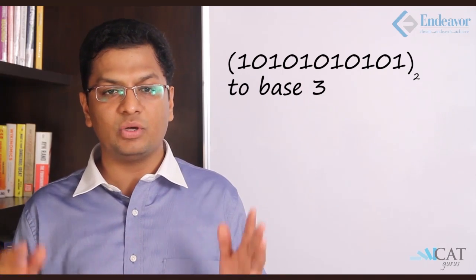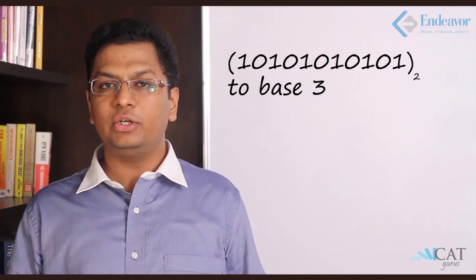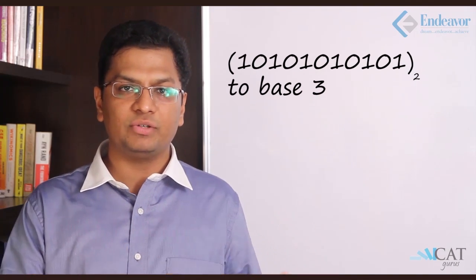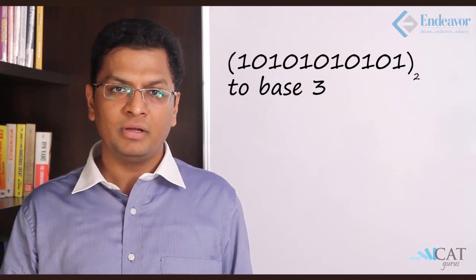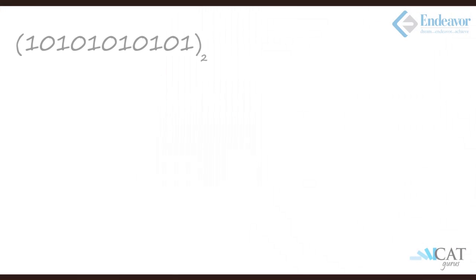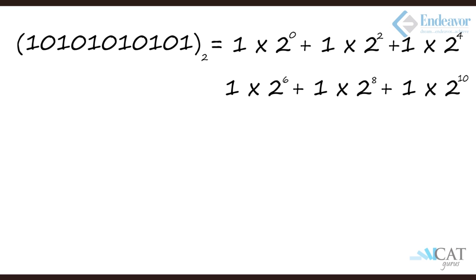Now let's convert a number from one base to another — specifically the 11-digit binary number 10101010101 to base 3. We can't convert directly; we must first convert to decimal. The number has six 1s at positions 0, 2, 4, 6, 8, and 10, so its decimal value is 2⁰ + 2² + 2⁴ + 2⁶ + 2⁸ + 2¹⁰ = 1365.